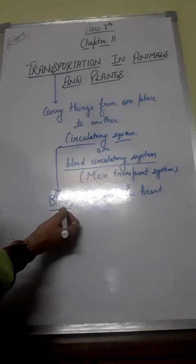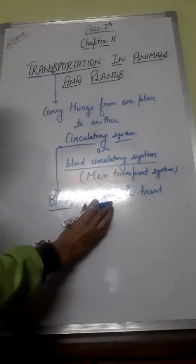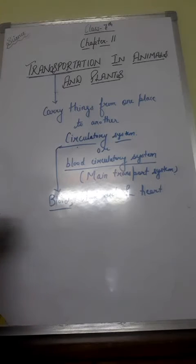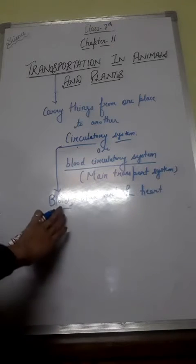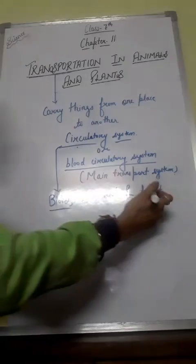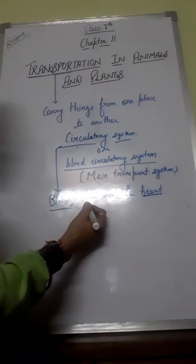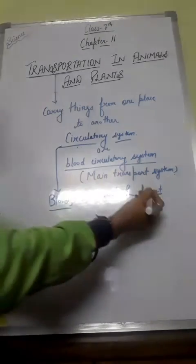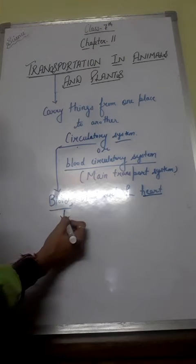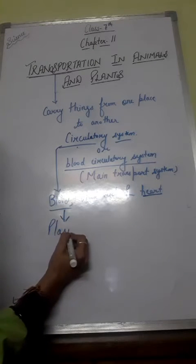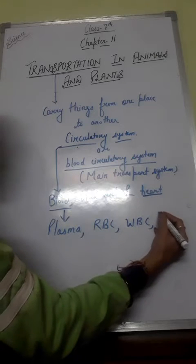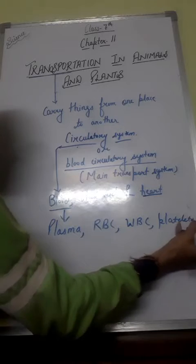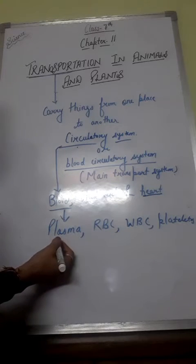Let us start with the first part of the circulatory system, that is blood. Blood is a fluid tissue that flows in blood vessels. It is red in color and flows through a network of tubes in the whole body, which we call blood vessels. Blood is pumped to every part of the body by the heart, and it travels through blood vessels. Blood consists of four components: plasma, red blood cells (RBCs), white blood cells (WBCs), and platelets.